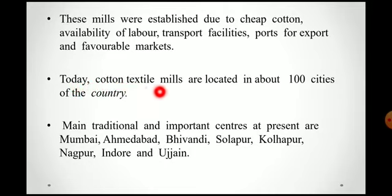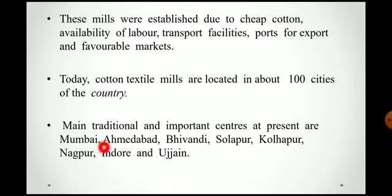Today, cotton textile mills are located in about 100 cities of the country. The main traditional and important centres at present are Mumbai, Ahmedabad, Bhivandi, Solapur, Kolapur, Nagpur, Indore and Ujjain. These are the main important centres of cotton textile industry — the most traditional industries are present in Mumbai, Ahmedabad, Bhivandi, Solapur, Kolapur, Nagpur, Indore and Ujjain.